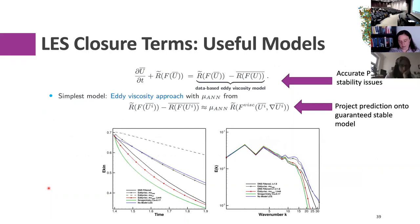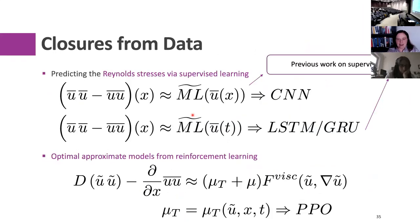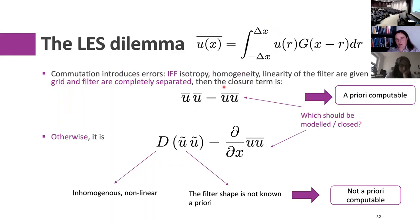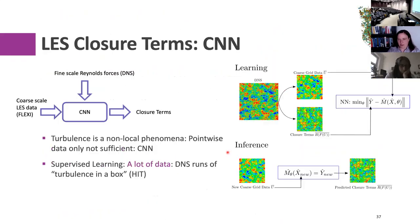We plugged it into our discontinuous Galerkin solver and ran into instabilities all the time. The reason is now clear: we were committing a fallacy — computing the a priori closure term and plugging it into the solver without considering that during the run, the actual closure term needed is the discretization-dependent one. So if I can predict the a priori term with 99.9% accuracy but the term I actually need is different, that's not useful. This blew up.